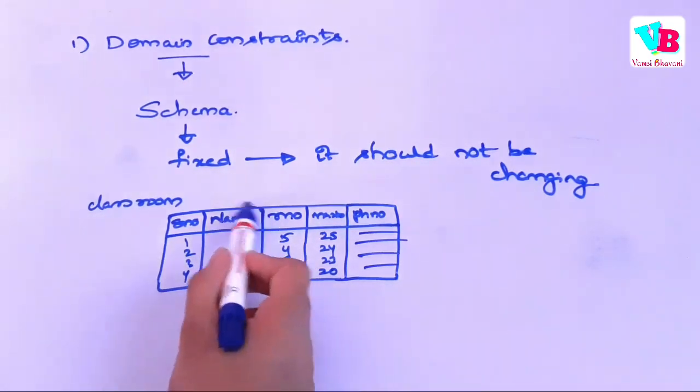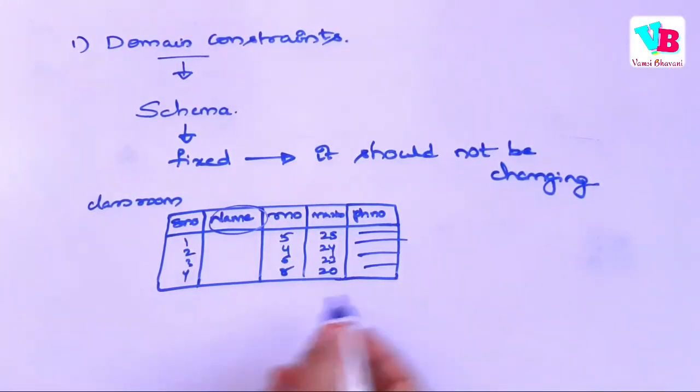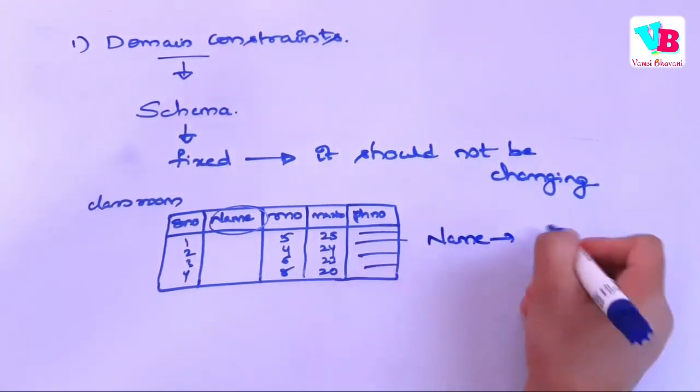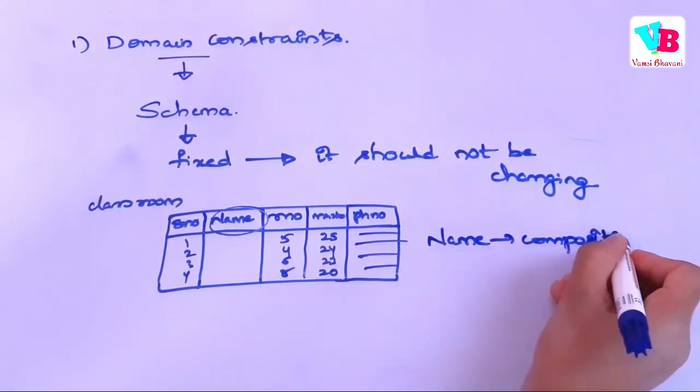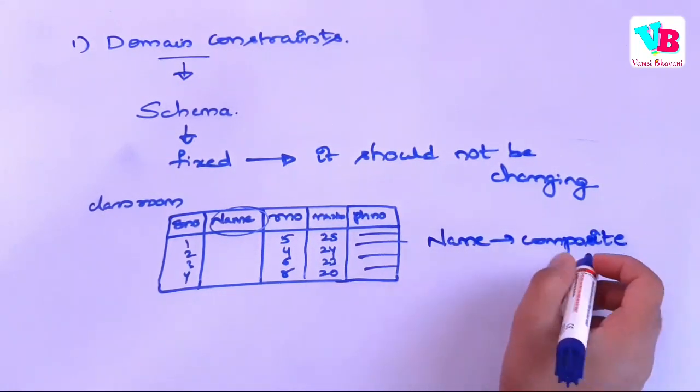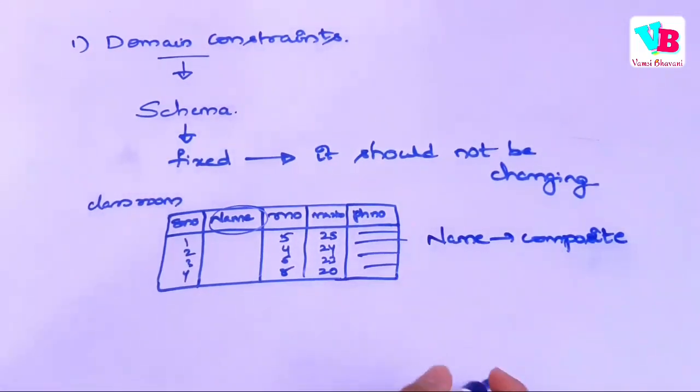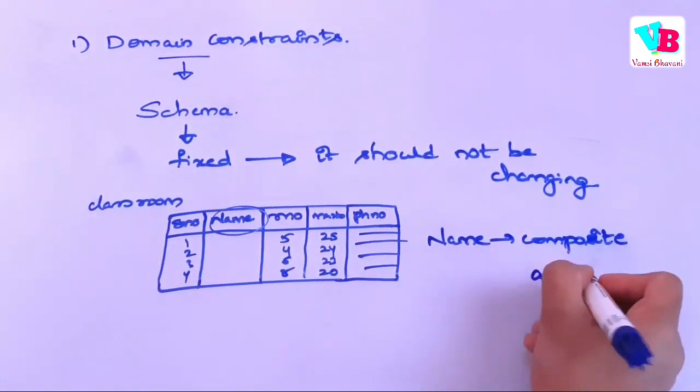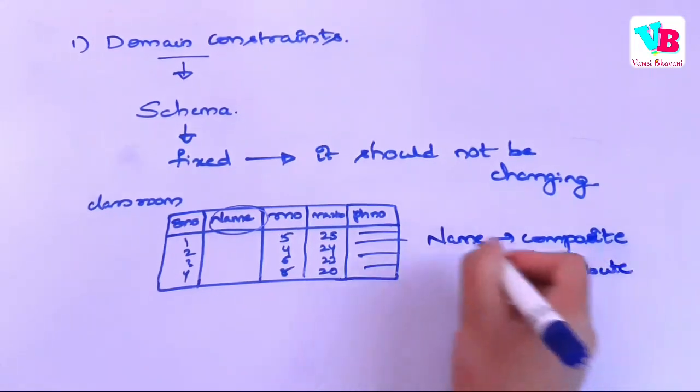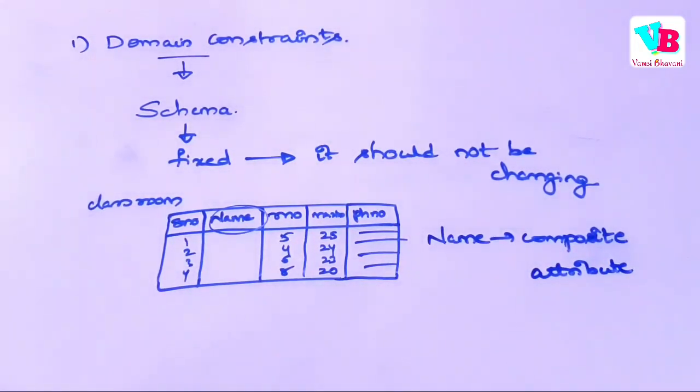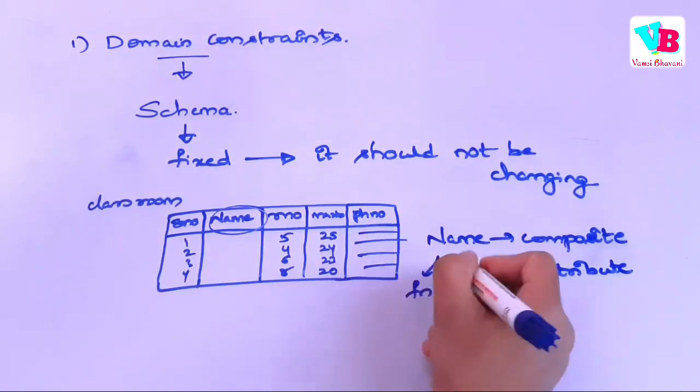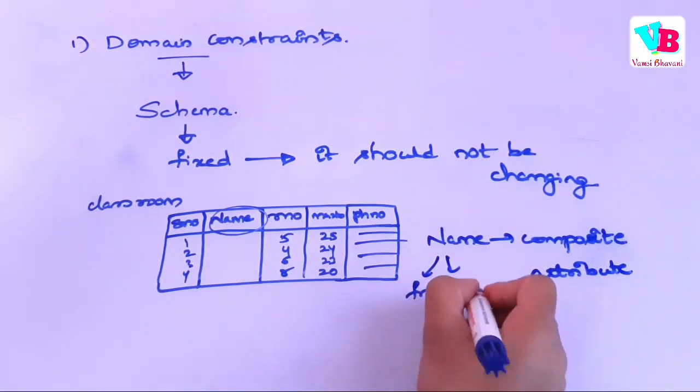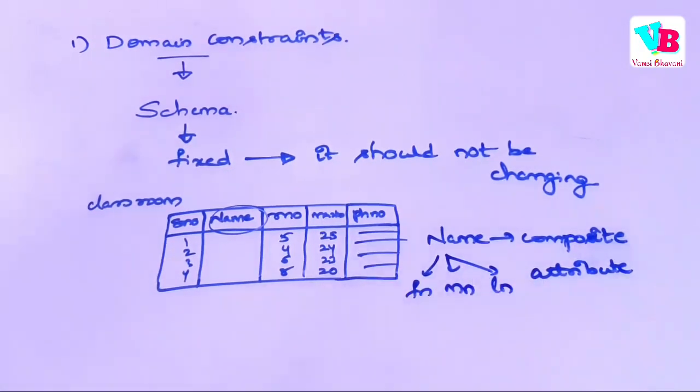Issue ekada anate, name ki. Yandaku? Name is a composite attribute. Types of attributes anayi video, name is a single attribute.